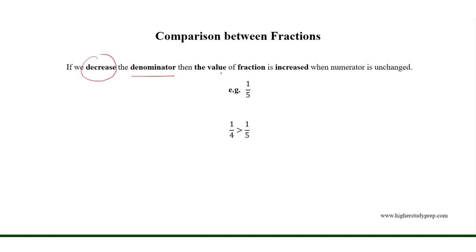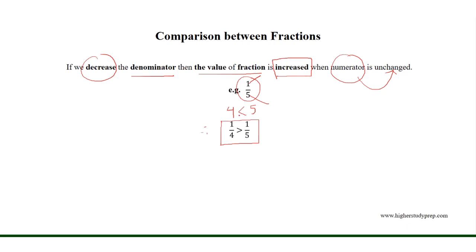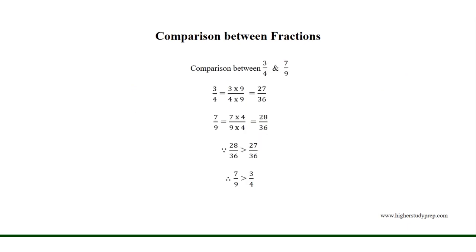If we decrease the denominator, then the value of the fraction is increased when the numerator is unchanged. For example, if we consider the fraction 1 over 5, where 1 is the numerator and 5 is the denominator, and we decrease the denominator from 5 to 4 — where 4 is less than 5 — therefore the fraction 1 over 4 is greater than 1 over 5. Thus the value of the fraction is increased keeping the numerator 1 unchanged when we decrease the denominator from 5 to 4.